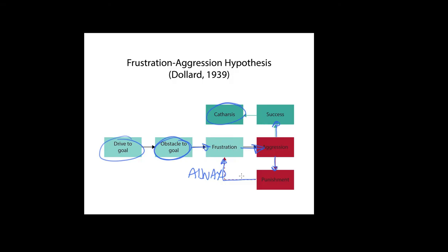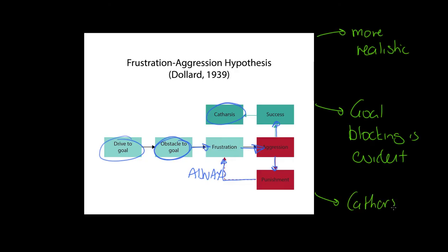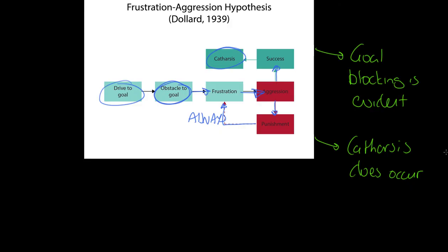What's good and bad about this theory? First of all, it's more realistic than social learning theory. The idea of goal blocking is evident in sport. People don't always succeed in sport, so goal blocking is there. We can also say that catharsis does occur. If the aggressive action is functional and leads to success, then that aggression will end. We also get the idea that the link between frustration and aggression is useful because if we can identify frustration, we can identify that aggression is going to happen and perhaps prevent it. This is the point I just made - coaches can manage aggression.